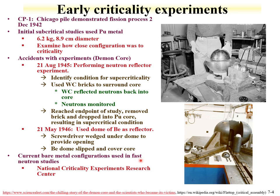Here's an example of current bare metal configurations used for fast neutrons at the National Critical Experiments Research Center at the Nevada National Security Site. This configuration called flat top allows a core of fissile material to be placed inside in a critical configuration. These fast neutrons are used to understand cross-sections, reactions, and fundamental physics of actinide isotopes.